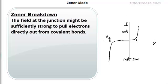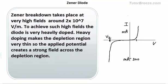Now this happens at an extremely high field of about 2 into 10 to the power 7 volt per meter. To achieve this high field generally the Zener diodes are heavily doped because if they are heavily doped the depletion region will be thin and it will be easier to acquire these high fields.